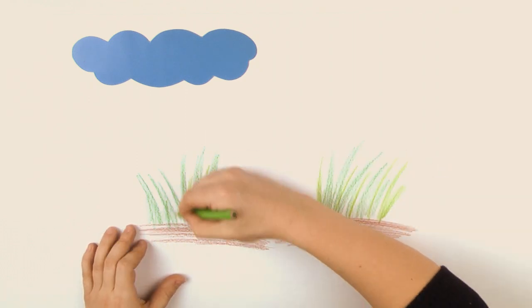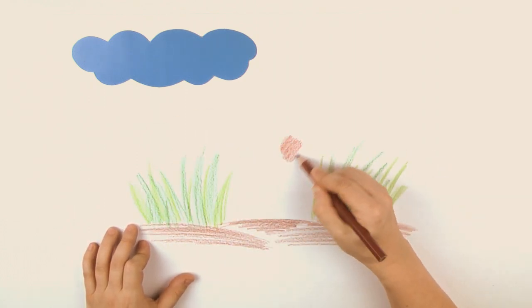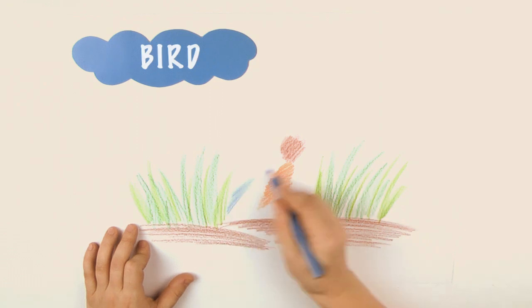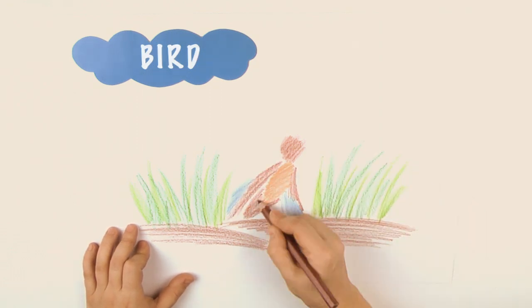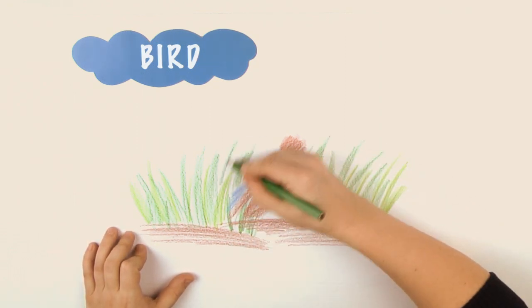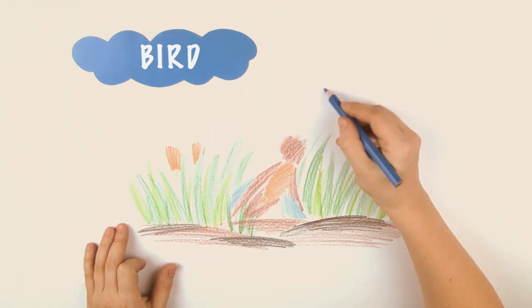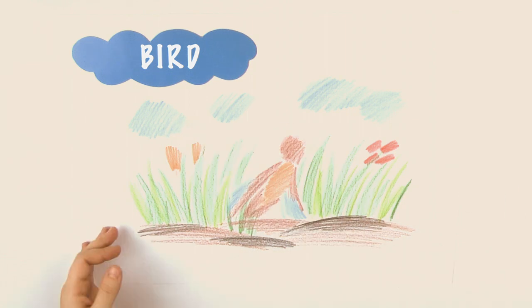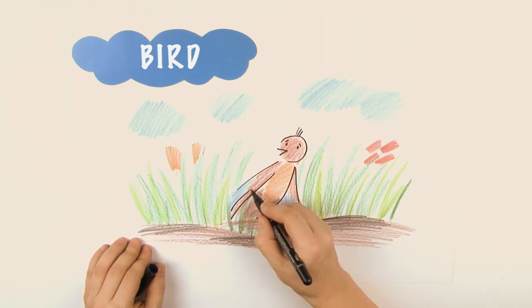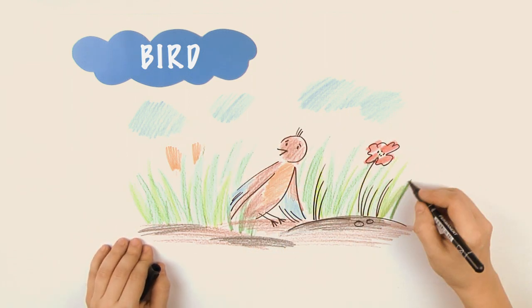Он осторожно раздвинул траву. И увидел птичку с подбитым крылом. Poor thing, said Тim. What happened to you? Бедняжка, сказал Тим. Что с тобой случилось?